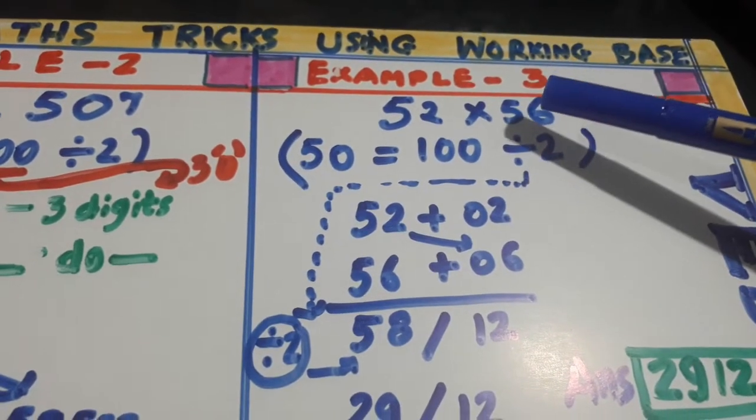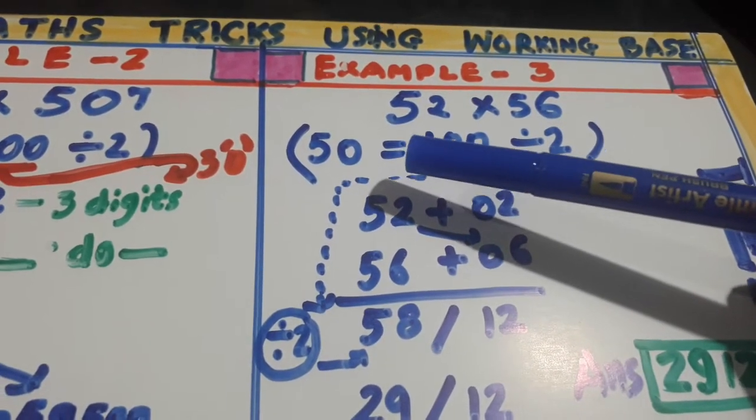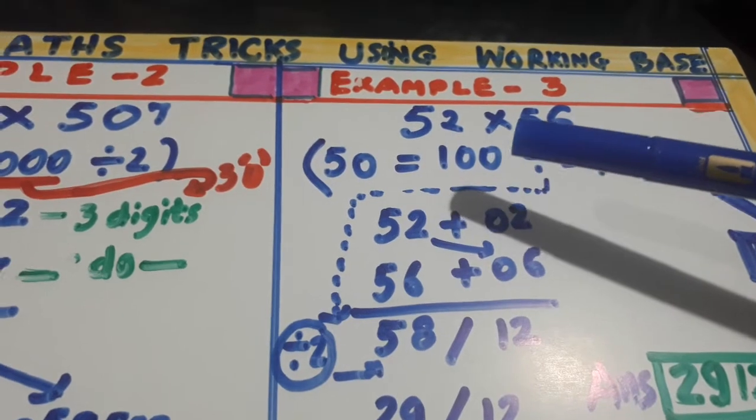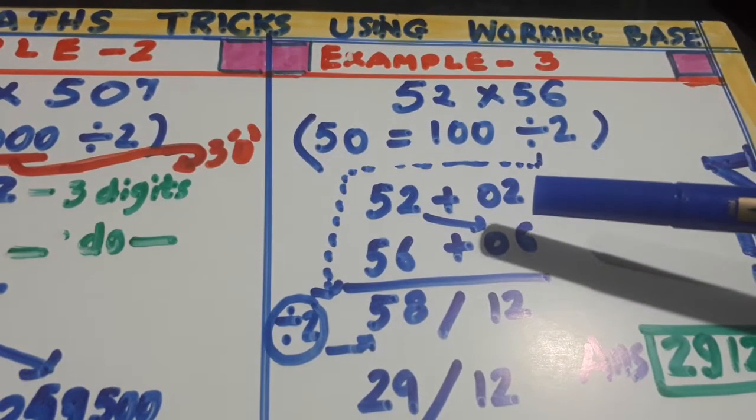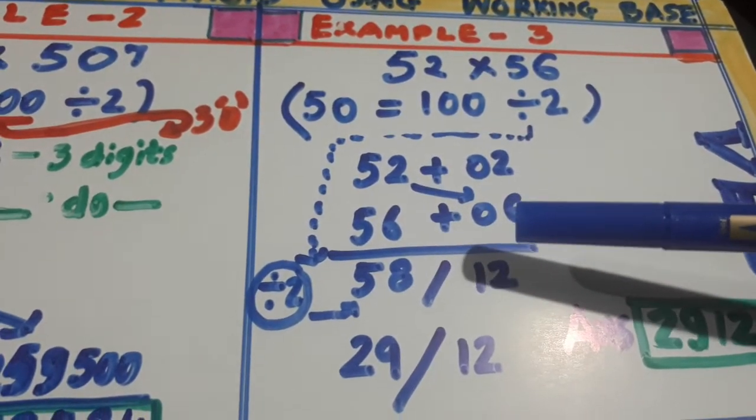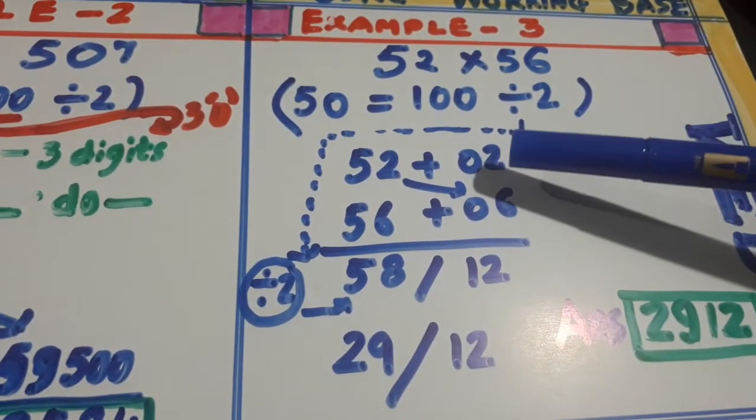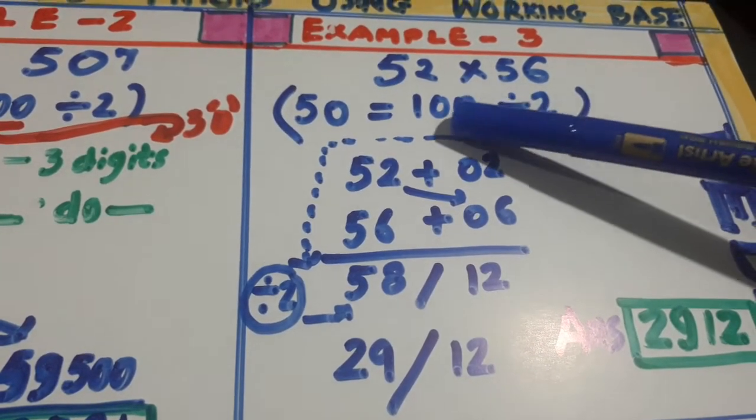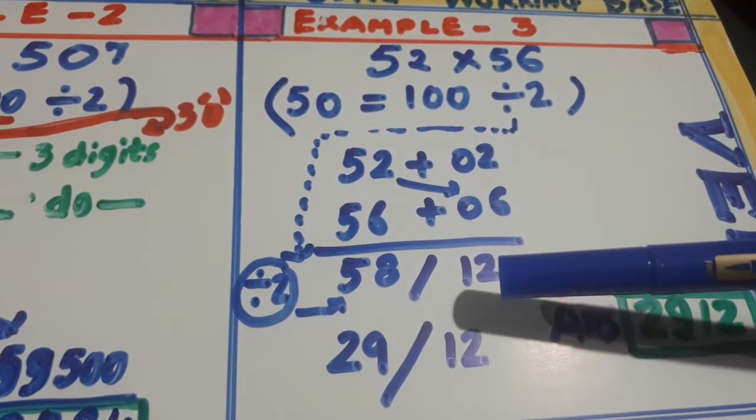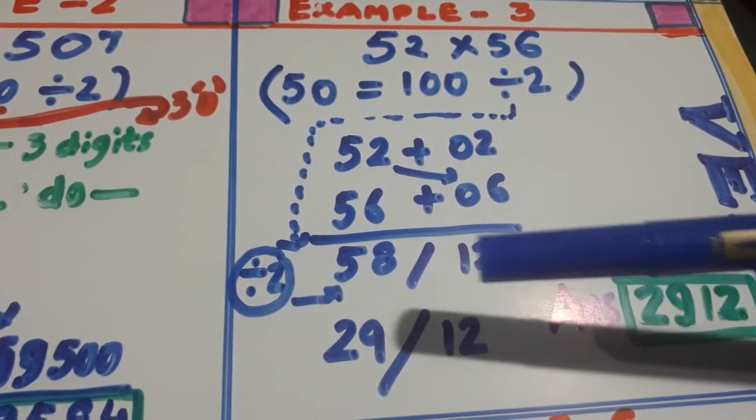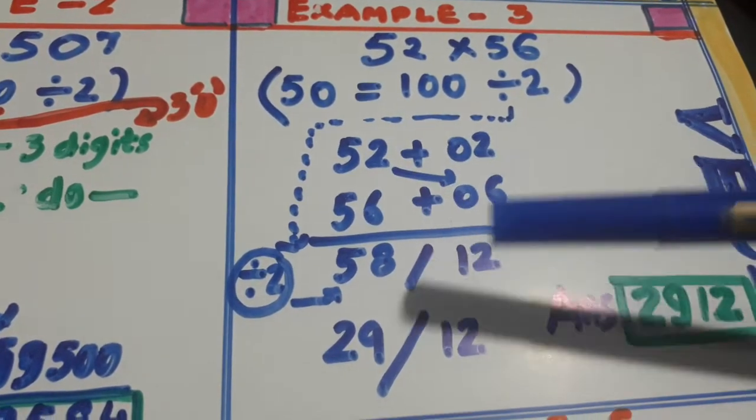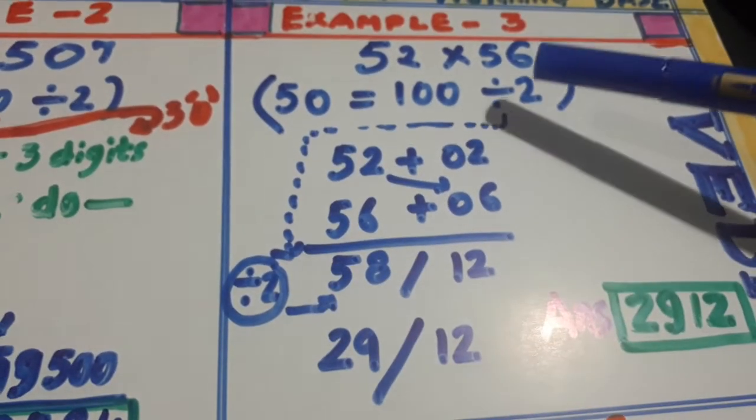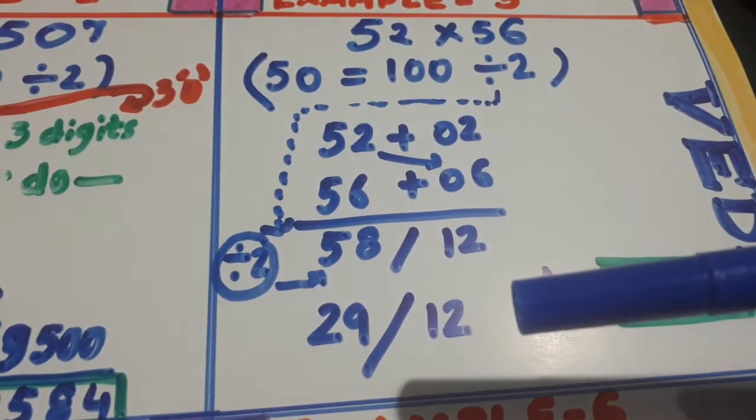this is 52 into 56. 50 is the working base. It can be written as 100 divided by 2. 52 is 2 more than 50. 56 is 6 more than 50. So since there are 2 zeros, write it in 2 digits. 6, 2s are 12. So take diagonally, 52 plus 6 is 58. Now we have to divide by 2. It is 2912.